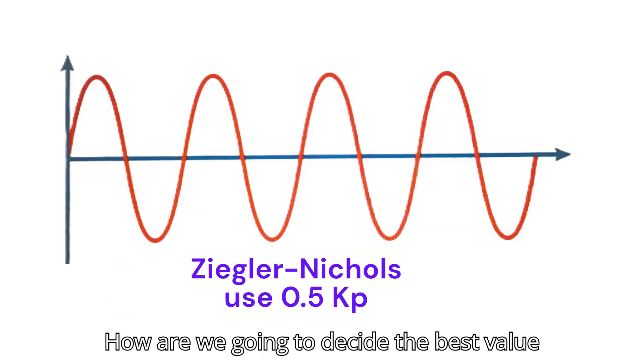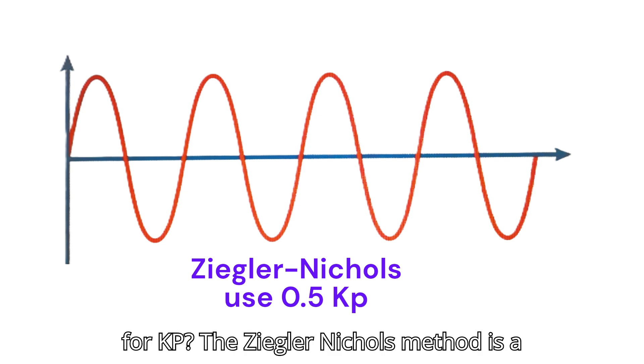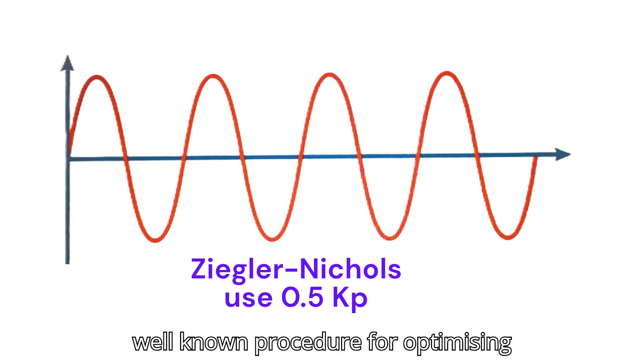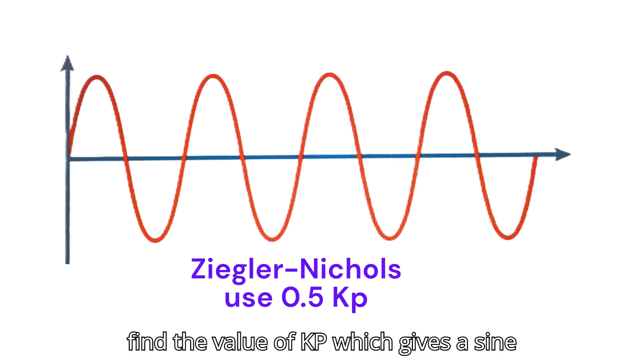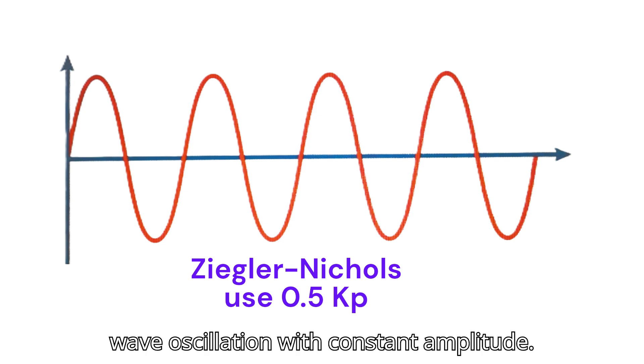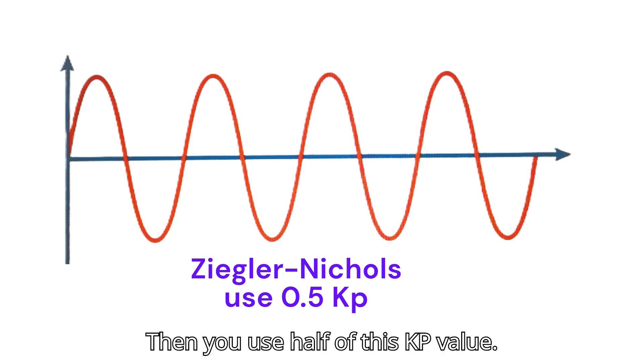How are we going to decide the best value for KP? The Ziegler-Nichols method is a well-known procedure for optimizing closed loop control. First you have to find the value of KP which gives a sine wave oscillation with constant amplitude. Then you use half of this KP value.